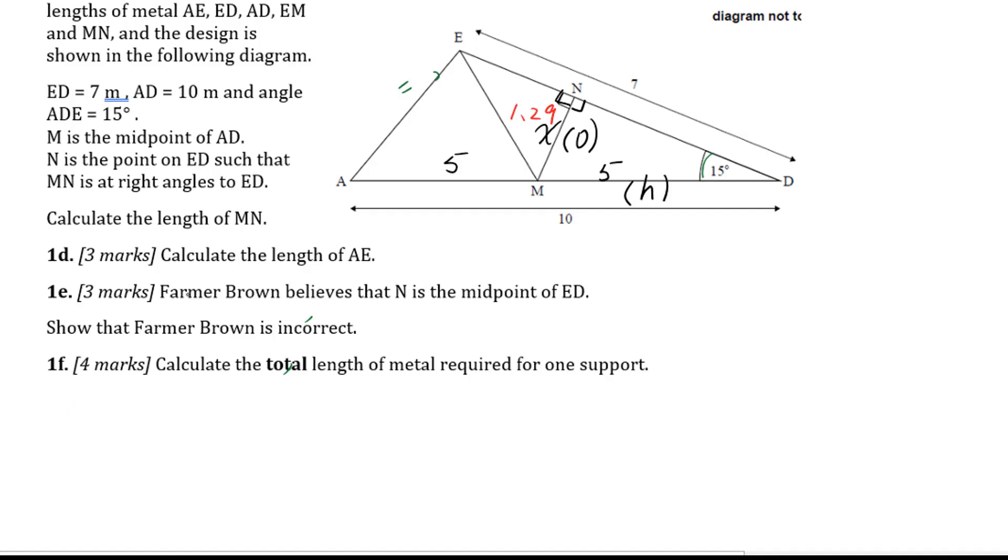Let's go to 1E. Farmer Brown believes that N is the midpoint of ED. Show that Farmer Brown is incorrect. So for 1E, if N is the midpoint of ED, we have to decide that EN equals ND equals 3.5. Therefore in right triangle MND, we already know MN equals 1.29 and MD equals 5. We can figure out ND by Pythagorean theorem.